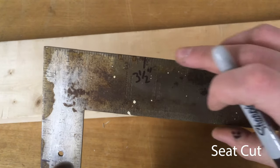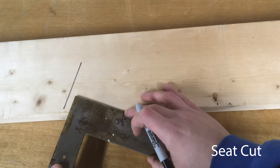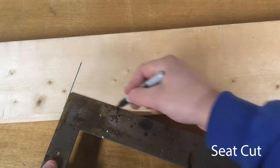Similar to the speed square, you put the length of the seat cut you want on the edge of your board, and then put your square up square against the heel cut you just made, and then make your mark.